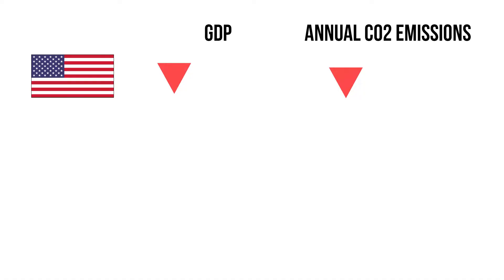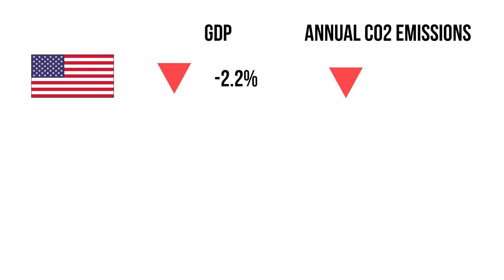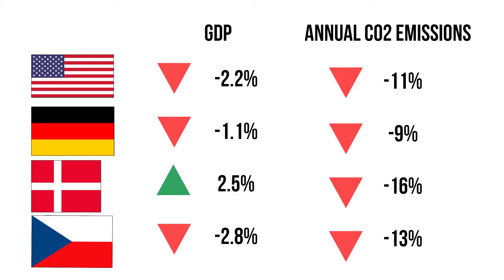Going into the real world, it is plain to see that in highly developed countries, annual CO2 emissions decrease without affecting GDP growth at all. For example, in the United States as of the year 2020, GDP grew by about 2.2% while annual CO2 emissions decreased by 11%. The same statistics can be observed in other countries like Germany, Denmark, Czech Republic, and others.